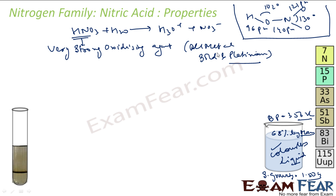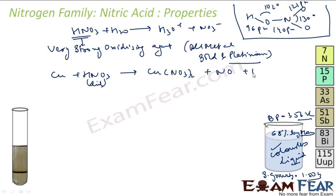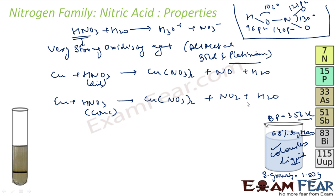The product of nitric acid reactions with metals depends on factors like concentration and temperature. For example, copper reacting with dilute nitric acid gives Cu(NO₃)₂ plus NO and water, while copper reacting with concentrated nitric acid gives Cu(NO₃)₂ plus NO₂ and water. The balanced equations are: 8HNO₃ (dilute) + 3Cu → 3Cu(NO₃)₂ + 2NO + 4H₂O, and 4HNO₃ (conc.) + Cu → Cu(NO₃)₂ + 2NO₂ + 2H₂O.